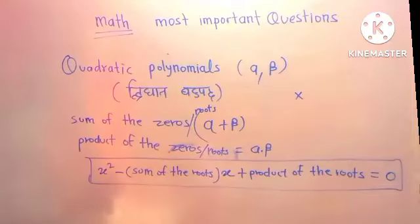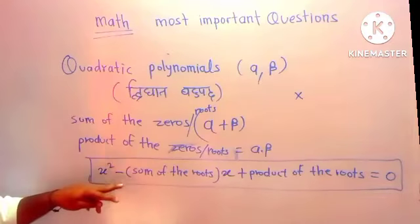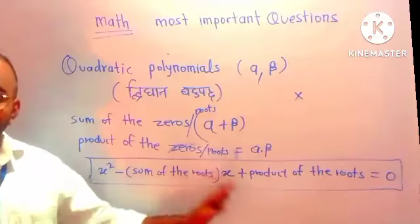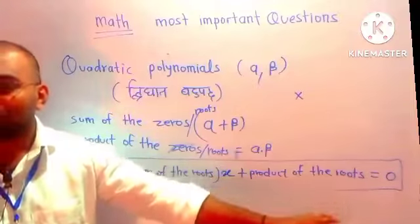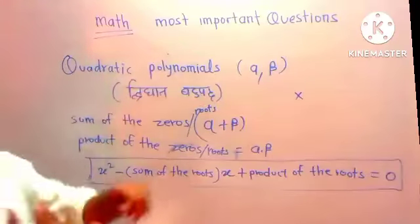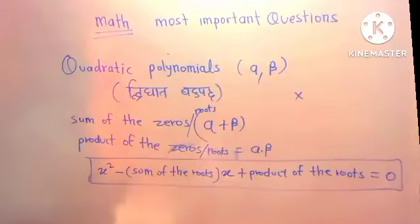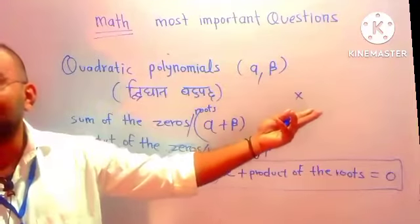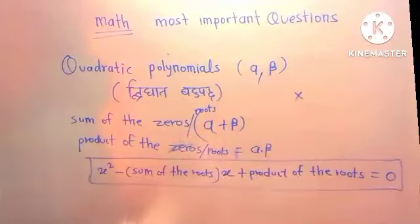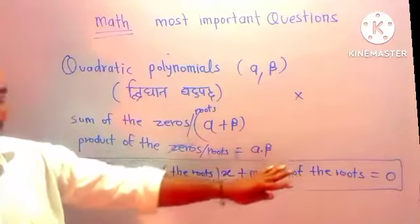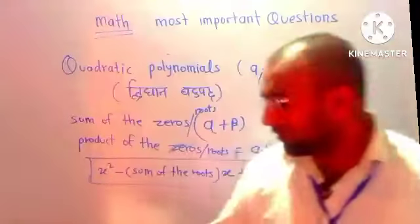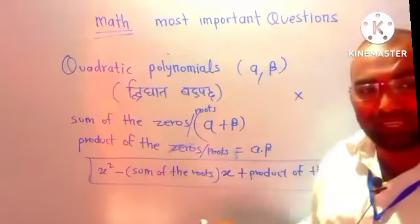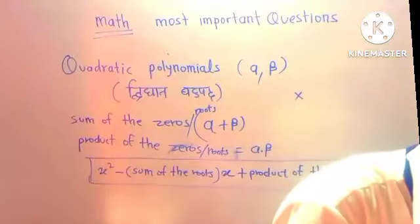This formula for quadratic polynomials is important — memorize it. The formula is: x squared, minus, sum of the roots, times x, plus, product of the roots, equals zero. For a quadratic polynomial, we have alpha and beta. Sum of roots = alpha + beta, product of roots = alpha × beta.